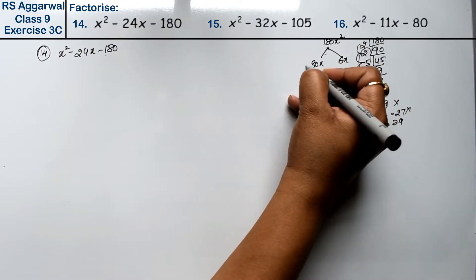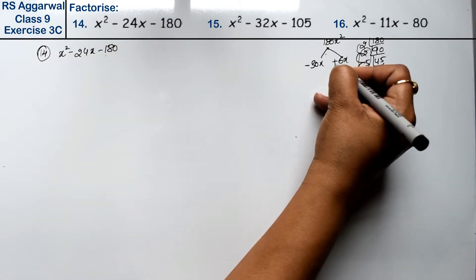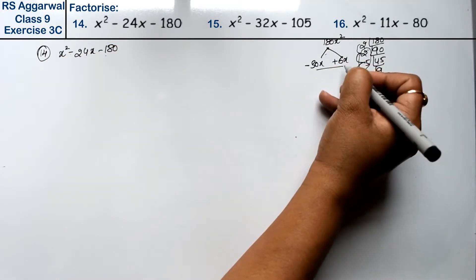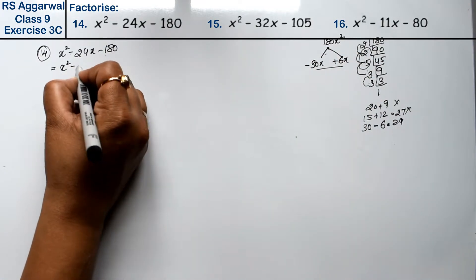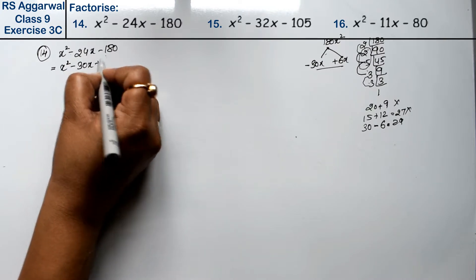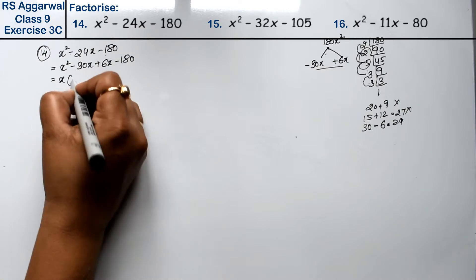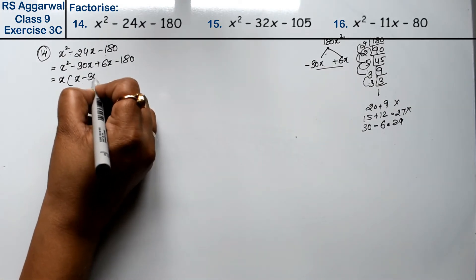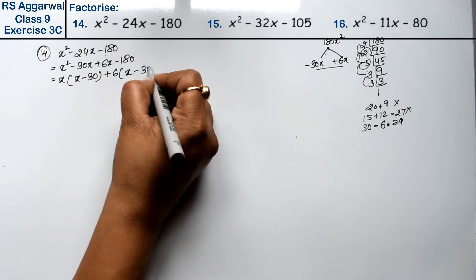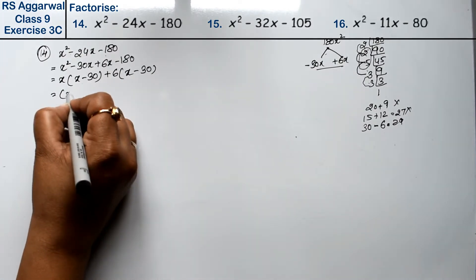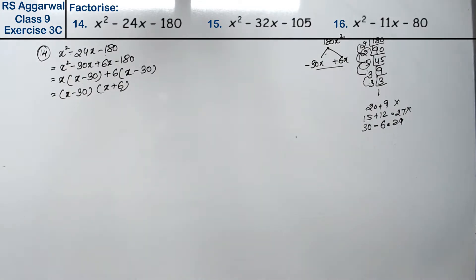In the case of minus, there will be the same sign of minus and the other will be the opposite sign. So what is coming is: x squared minus 30x plus 6x minus 180. x is common, giving x minus 30; plus 6 is common, giving x minus 30. So x minus 30 is common, and the answer is x plus 6.